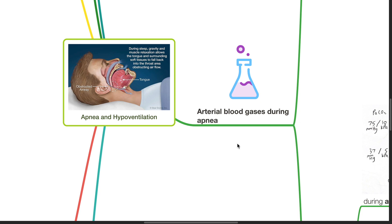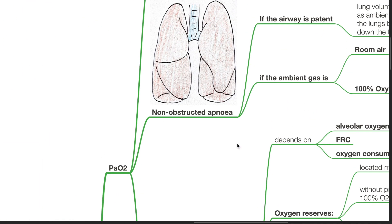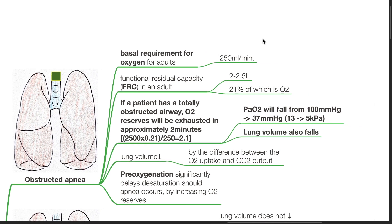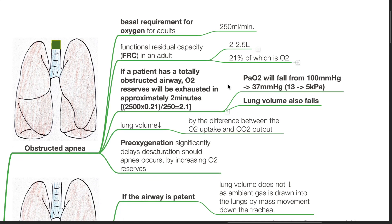Arterial blood gases during apnea — PAO2. In obstructed apnea, the basal oxygen requirement for adults is around 250 mL per minute and the FRC in an adult is 2 to 2.5 litres, 21% of which is oxygen. If a patient has a totally obstructed airway, oxygen reserves will be exhausted in approximately 2 minutes and PAO2 will fall from 100 mmHg to 37 mmHg. Lung volume also falls; the decrease amounts to the difference between oxygen uptake and CO2 output.